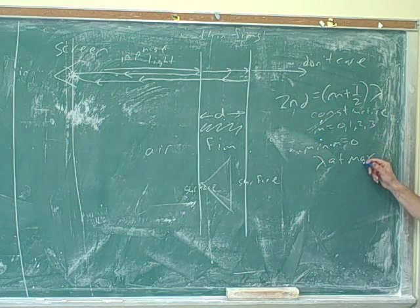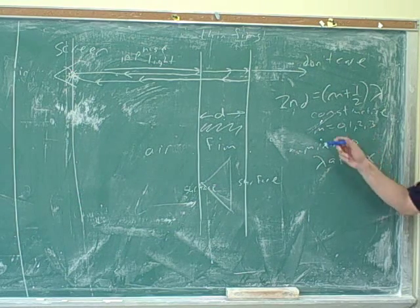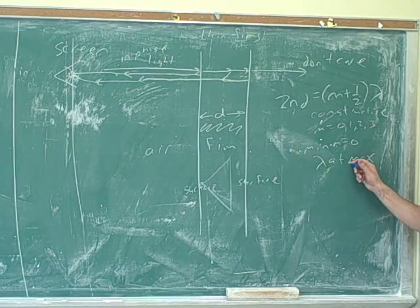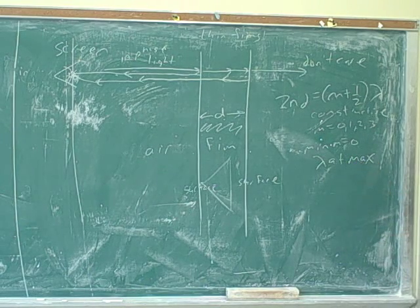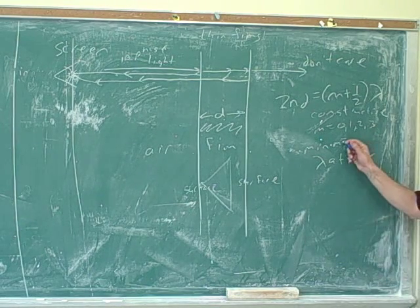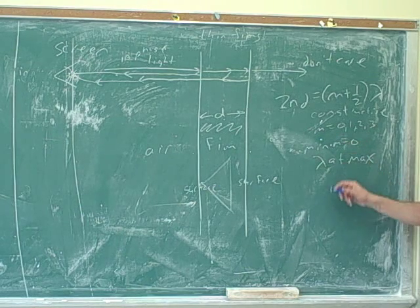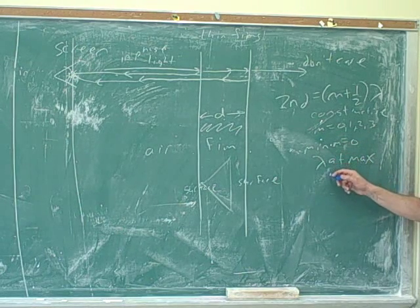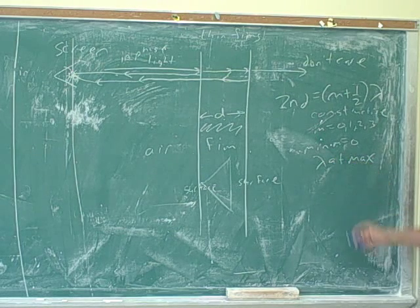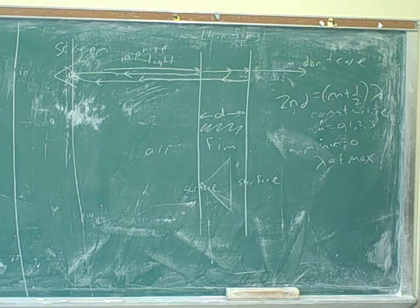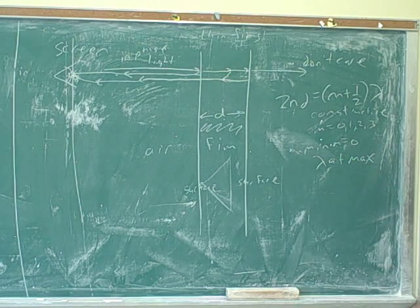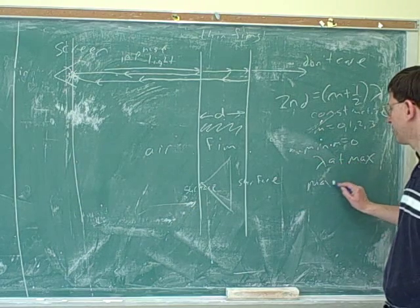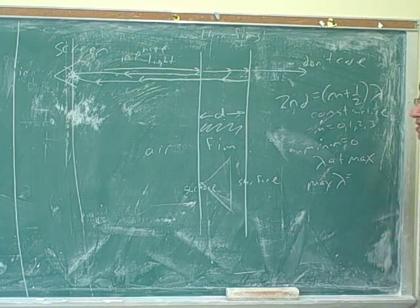What that means is there is a certain maximum wavelength that can experience the constructive interference. And any color above that wavelength can't experience constructive interference, no matter what you do to M. No matter what you do to the M, there's a certain wavelength past which bigger wavelengths can't experience the constructive interference.